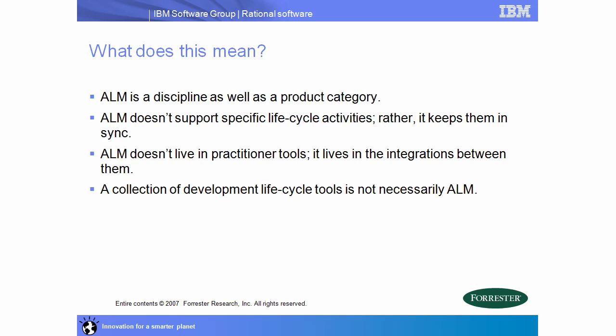So what exactly does this mean? It's a discipline, but it's also a product category. Teams practice the discipline of ALM to ensure that they have traceability, automation, and reporting across the various disciplines in the life cycle. But at the same time, it's a product category that vendors seek to provide solutions for. It doesn't really support specific life cycle activities, but rather it focuses on keeping them in sync.